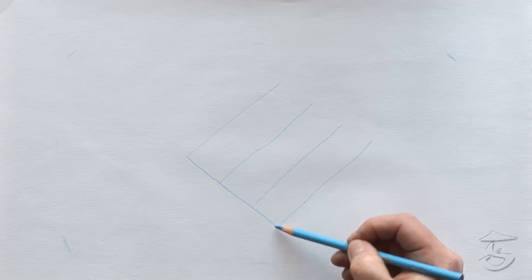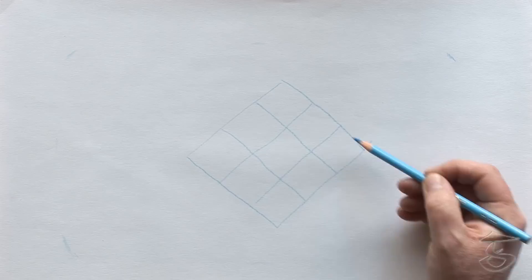One, two, three, four. And then we go perpendicular. One, two, three, four. And obviously we're trying to make the squares sort of the same.